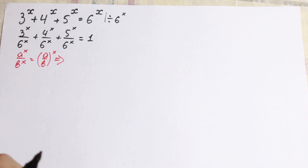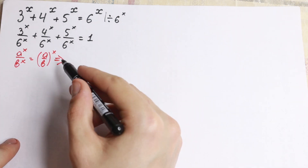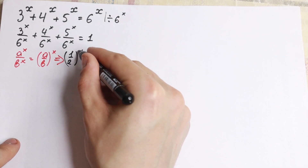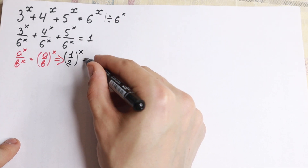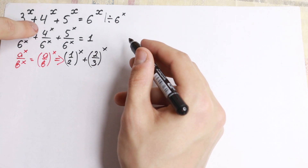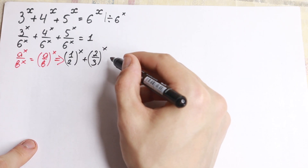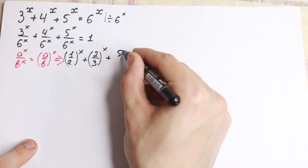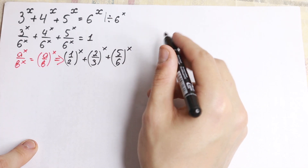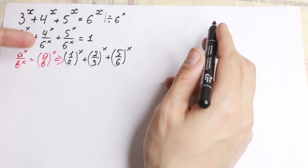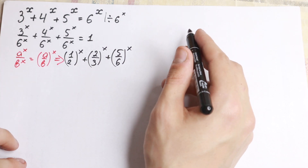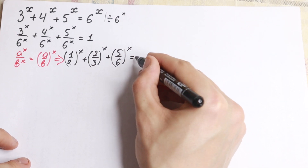If we apply this rule, 3 over 6 will be one half, so we will have one half to the power x. Plus 2 thirds to the x — just dividing numerator and denominator by 2. And of course plus 5 over 6 to the power x. All of this is equal to 1.